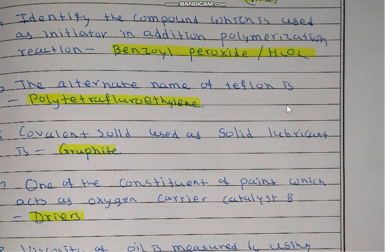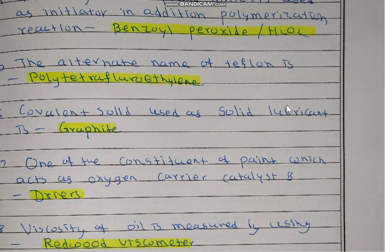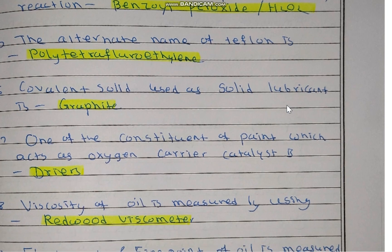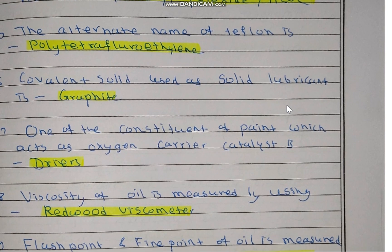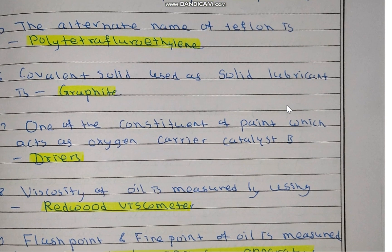The alternate name of Teflon is polytetrafluoroethylene. The covalent solid used as a solid lubricant is graphite. One of the constituents of paint which acts as an oxygen carrier catalyst is known as the dryer. Viscosity of oil is measured by a Redwood viscometer.